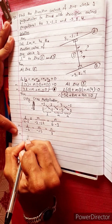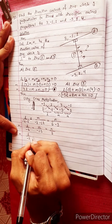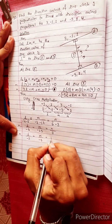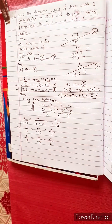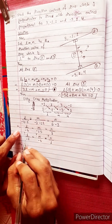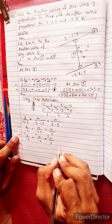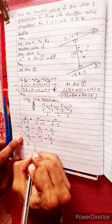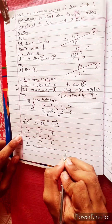Therefore L divided by minus 6 equals M divided by minus 5 equals N divided by 3. Simplifying, L equals N by 1.